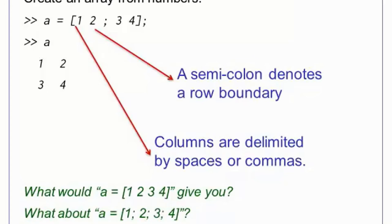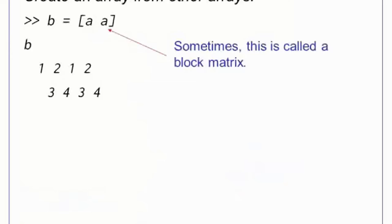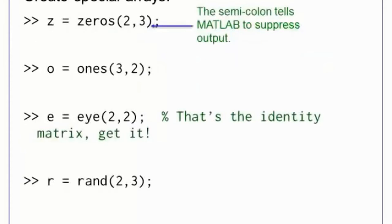Sometimes, it is helpful to create a block array by using other arrays rather than scalars in the definition. This is fine as long as the sizes of the arrays match up. In this case, we tried to combine a 2x4 matrix with a scalar, which is the same as a 1x1 matrix. MATLAB will not allow this. There are many other ways to make matrices. The functions zeros and ones will create matrices that have all 0s or all 1s. Another special function is eye, which creates an identity matrix. Finally, rand creates a matrix of random doubles between 0 and 1.